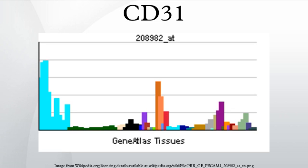Tissue distribution: CD31 is normally found on endothelial cells, platelets, macrophages and Kupffer cells, granulocytes, T/NK cells, lymphocytes, megakaryocytes, osteoclasts, and neutrophils.